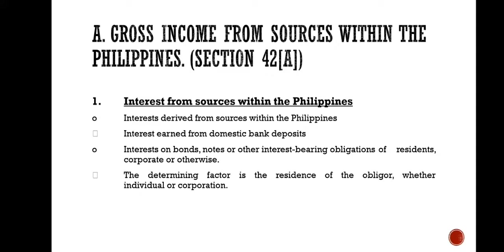Gross income from sources within the Philippines is covered under Section 42, Paragraph A of the NIRC. Number 1 is interest from sources within the Philippines — interest earned from domestic bank deposits, interest on bonds, notes, or other interest-bearing obligations of residents, corporate or otherwise. The determining factor is the residence of the obligor, whether individual or corporation.